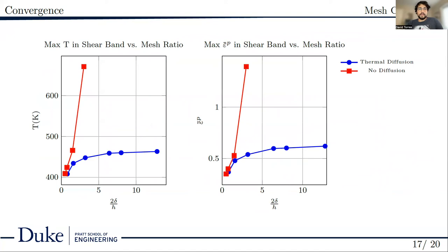Here, we look at the trends of peak values within the shear band as we increase mesh refinement. The left chart displays the maximum temperature, while the right chart displays the maximum plastic strain. The red lines show the results without thermal conductivity, while the blue lines display the behavior with thermal conductivity.